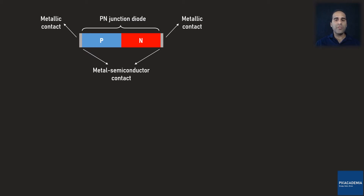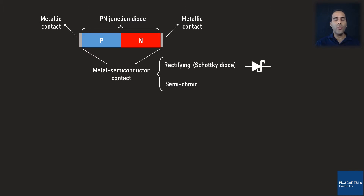In general, a metal semiconductor junction can be used to build a rectifying device or a semi-ohmic contact. A rectifying device made out of a metal semiconductor contact is called a Schottky Diode, and here is the symbol we use to show a Schottky Diode in an electronics circuit. A semi-ohmic contact could be another product of a metal semiconductor junction. The semi-ohmic contact is important since it connects a semiconductor device such as a PN junction diode to the outside world without adding any rectifying effect.